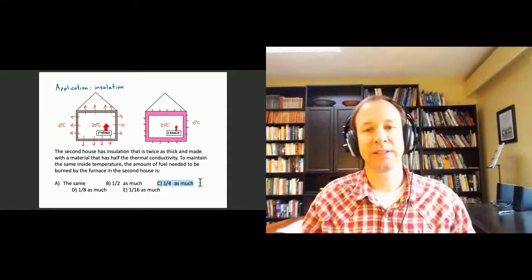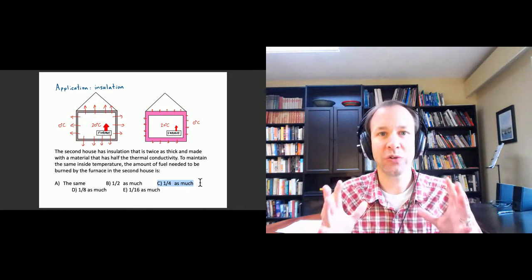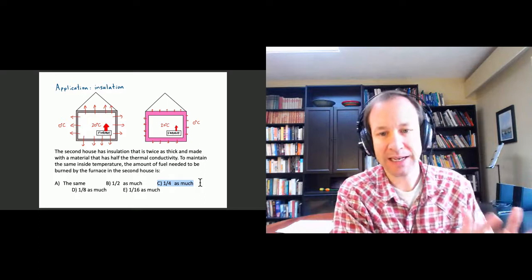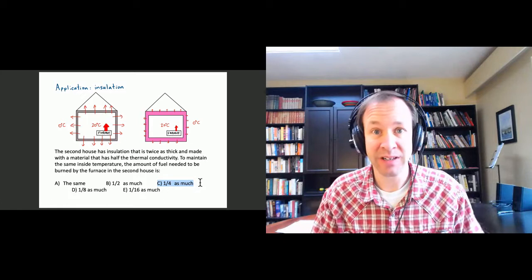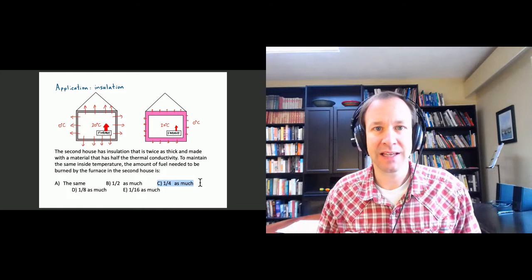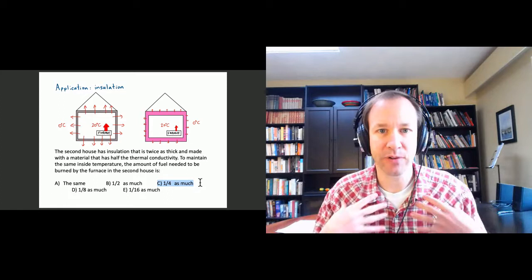It's clearly very effective to choose materials with low conductivity and to layer insulation on your walls — if you double the insulation layer, you halve the heat you need to burn in your furnace. Similarly, if you're wearing clothes and you put another shirt on top, your body loses heat at half the rate through that layer compared to before.